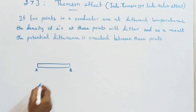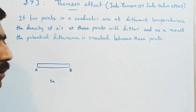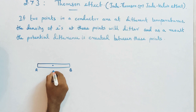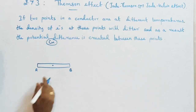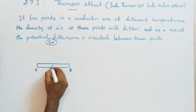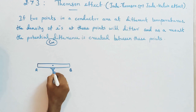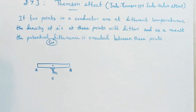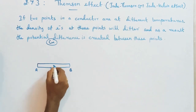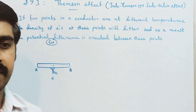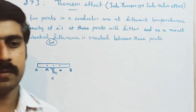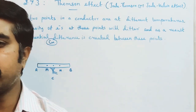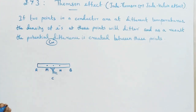First, let us take an unequally heated copper metal bar. The midpoint of the metal bar is denoted by letter C. Let us heat the midpoint C of the copper metal bar. Now take two points — both equidistant from the midpoint C. These two points are named M, and because they are equidistant from C, they maintain the same temperature.